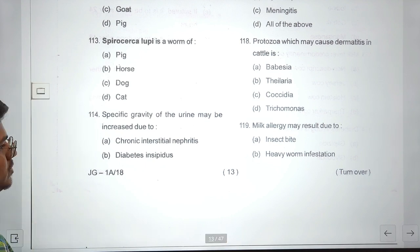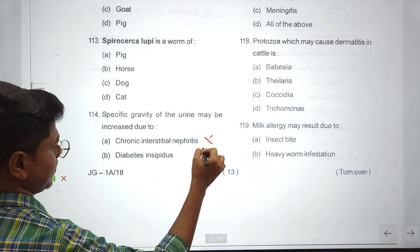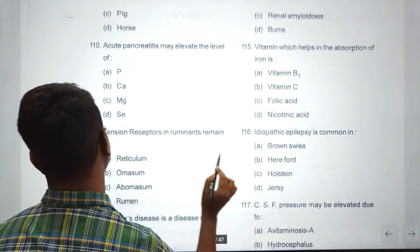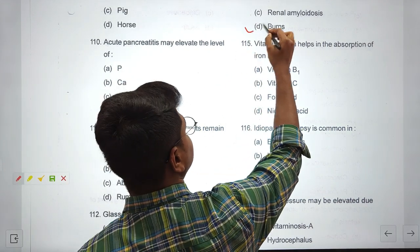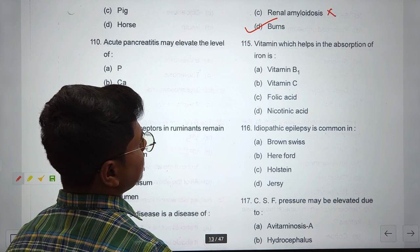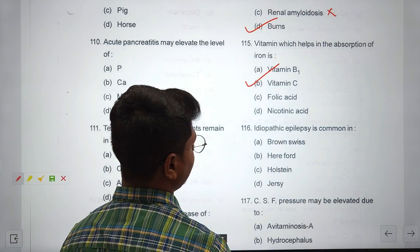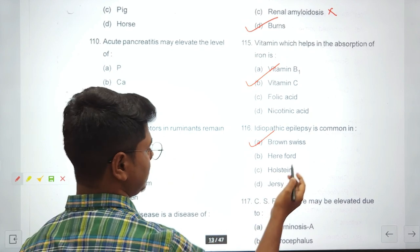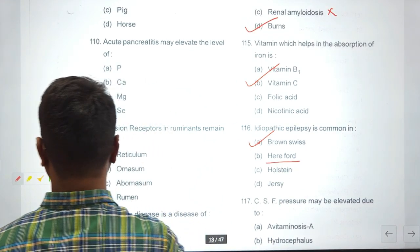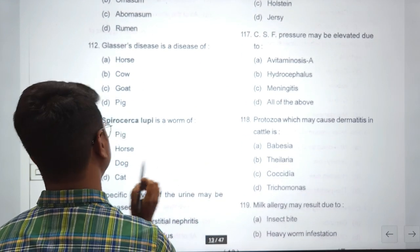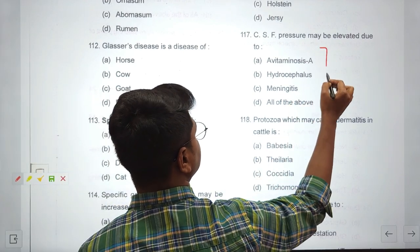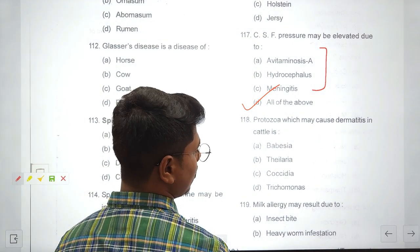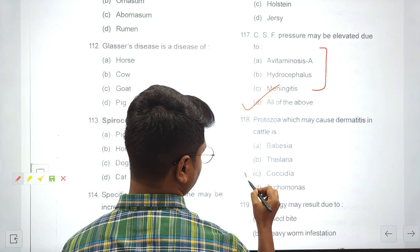Glucose is added in ORS solution to increase level of sodium - along with glucose absorption, sodium is also absorbed by co-transport. Animal which remains standing in peritonitis - this came in our internal examination, answer is cattle. This is direct question from Veterinary Medicine by Amaranth Chakravarti. Acute pancreatitis may elevate level of - also from Amaranth Chakravarti. Phosphorus level increases, calcium and magnesium decrease, sodium and potassium also decrease. Tension receptors in ruminants remain in rumen and reticulum, most appropriate is rumen. Glasser's disease is disease of pig.